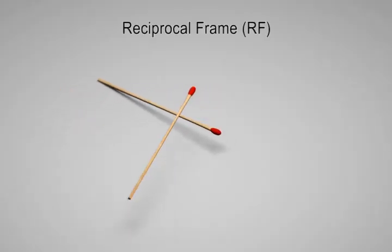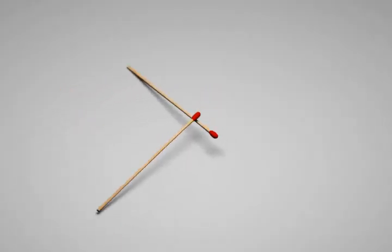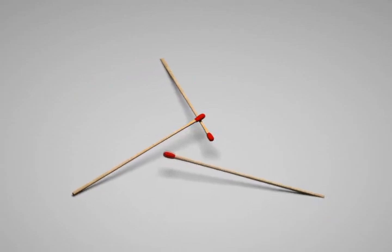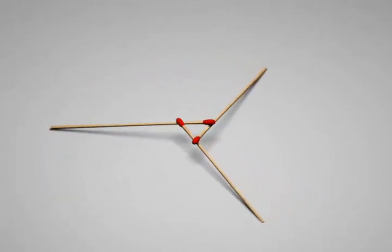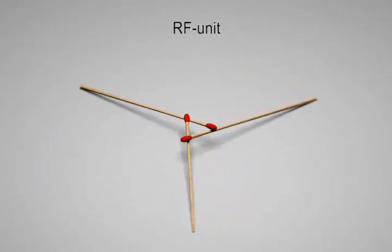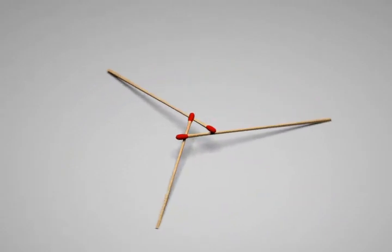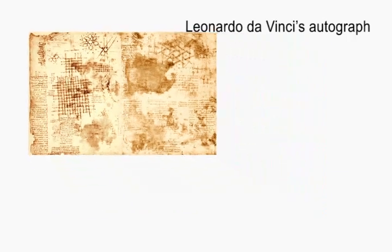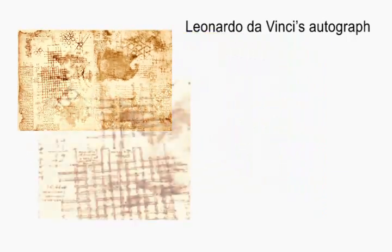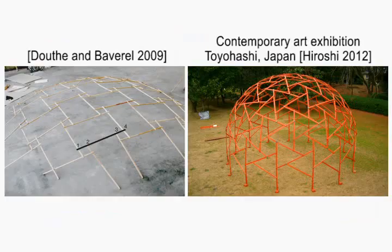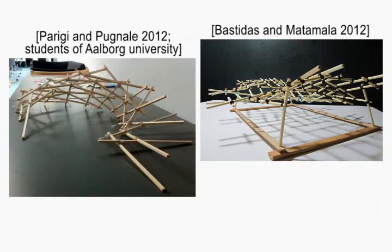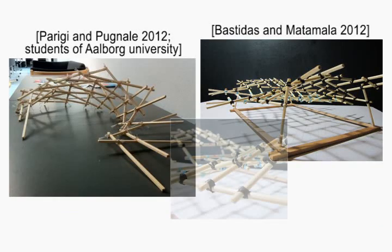A reciprocal frame is a self-supported 3D structure made up of three or more sloping rods that form a closed circuit, referred to as an RF unit. This concept has been known for many centuries; however, recently there has been a revived interest in extending it to design large RF structures such as the ones shown here.